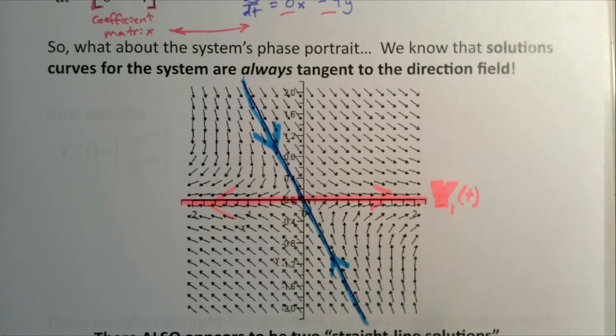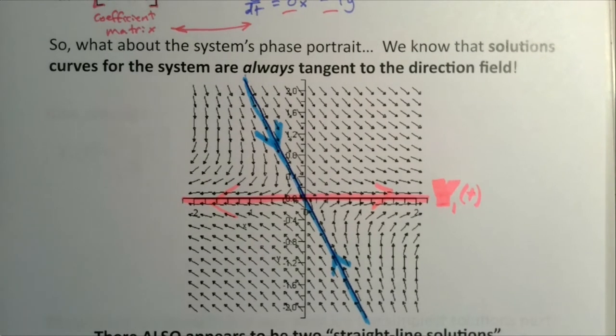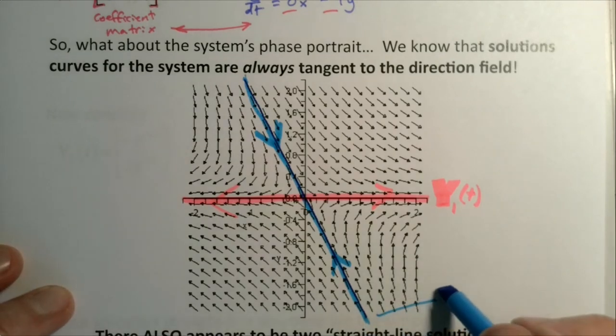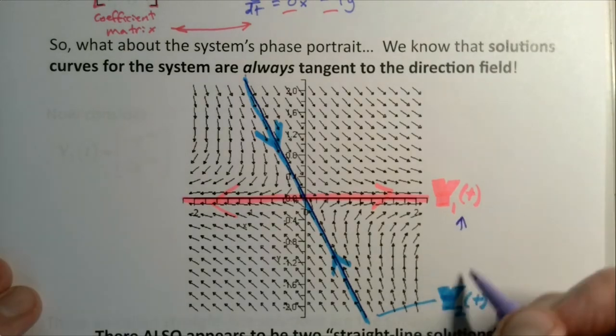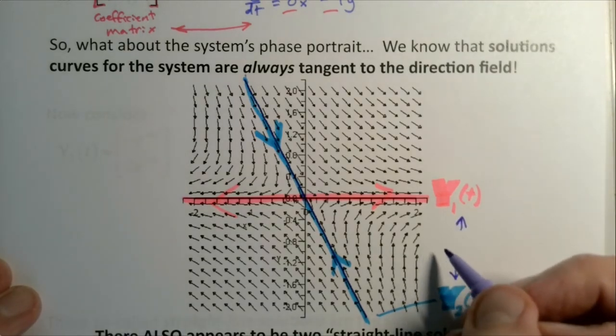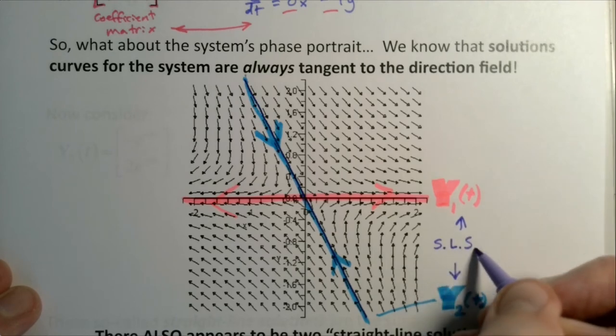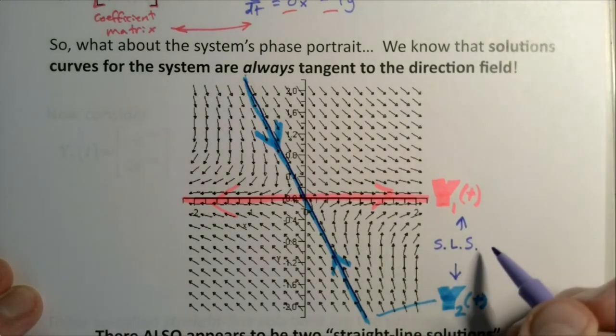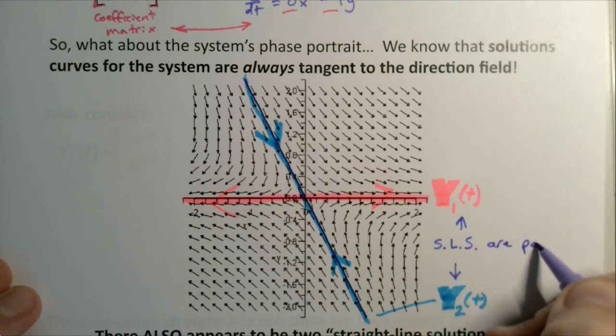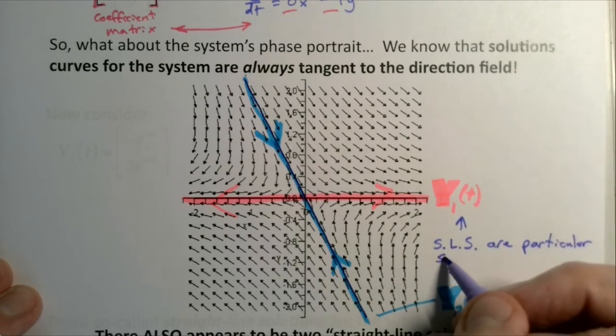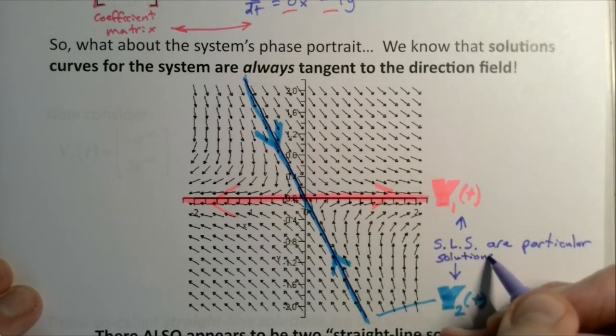If we call this one - call this guy right here y1 of t - that is a particular solution. And the other one right here we can call y2 of t. It's worth noting that y1 and y2 are particular solutions. These two guys right here, these are straight-line solutions, abbreviated SLS. Straight-line solutions, and these are particular solutions of the system.